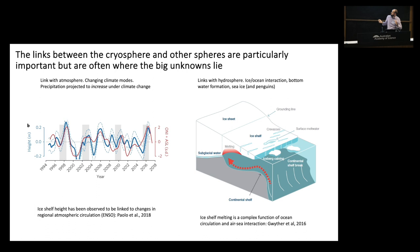The atmospheric models used in cryospheric sciences suggest that precipitation is going to increase under climate change due to a wetter atmosphere. But the models themselves are not great, and there needs to be more development of atmospheric models around Antarctica in order to make better projections.